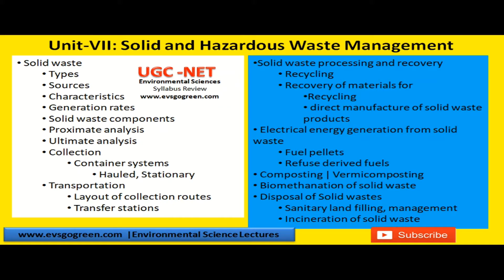Under unit 7 — solid and hazardous waste management — you have types, sources, characteristics, and generation rates of solid waste, followed by solid waste components. Then how do you measure them, that is proximate analysis and ultimate analysis. How do you collect this solid waste, and what are the different kinds of container systems used? Particularly there are different types, mainly the haul and the stationary type of container systems.